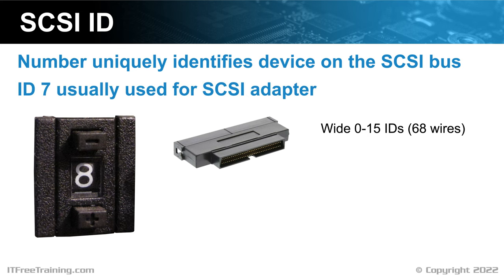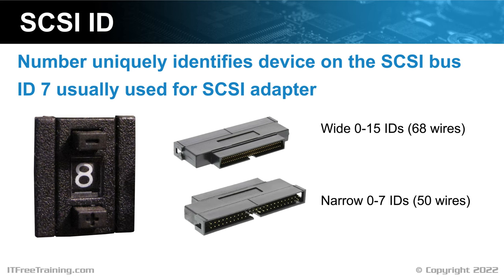So in the case of wide SCSI, a device won't be able to use SCSI ID seven. In the case of narrow SCSI, there are eight SCSI IDs, and once again the SCSI adapter will usually use SCSI ID seven. It may seem strange in the case of wide SCSI to have the SCSI ID in the middle of the ID range. The reason for this is it is possible to combine wide and narrow SCSI together. When this occurs, the bus will change to narrow SCSI. You can see why they use seven since it won't change if the bus changes from wide to narrow. Perhaps they should have used SCSI ID zero for the SCSI adapter; however, it appears the thinking at the time was to use the last SCSI ID on the bus. When they created wide SCSI, they had already set a convention, so it was too late to change.